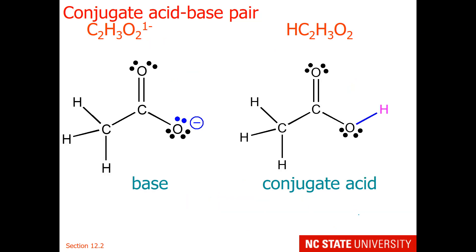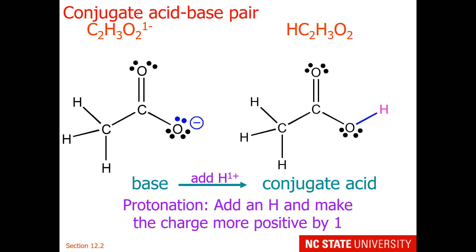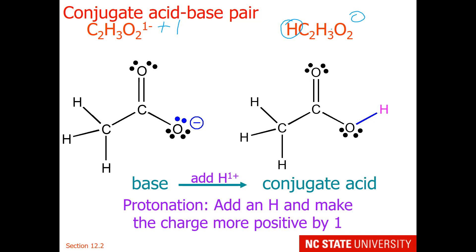Here is another conjugate acid-base pair. You may recognize this as the acetate ion, C₂H₃O₂⁻. This material is a base, and when we protonate it, we get the conjugate acid — this is known as protonation. We add a hydrogen and make the charge more positive by 1. You notice we have added a hydrogen right here and made the charge more positive by 1, giving a 0 charge.